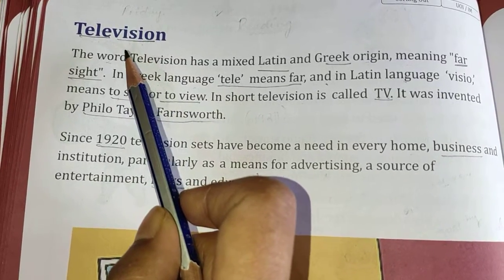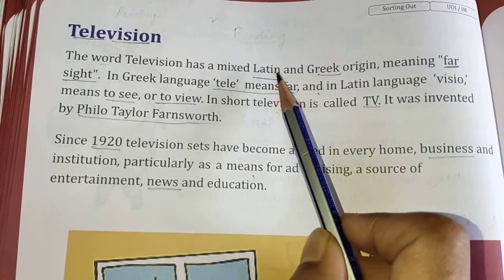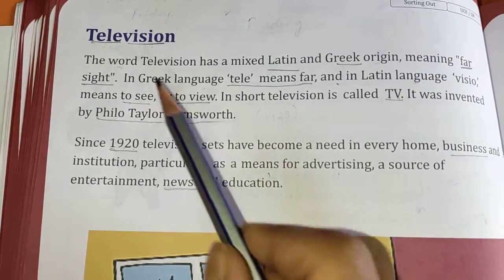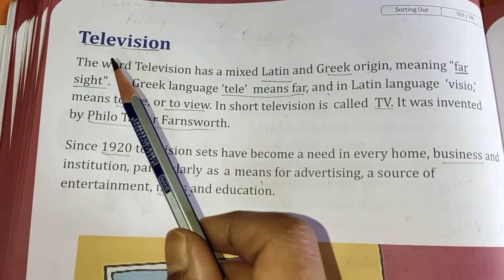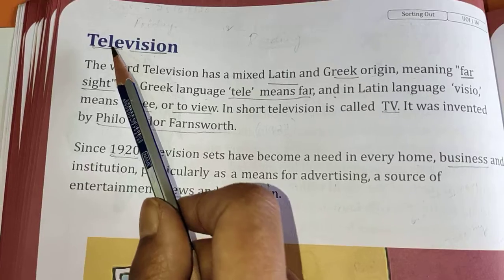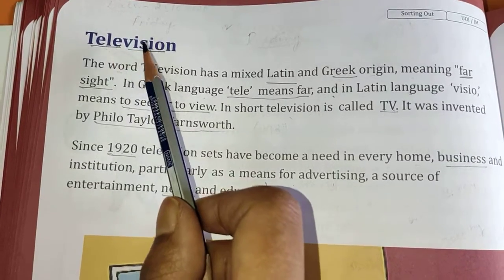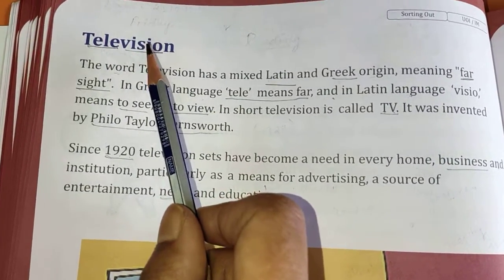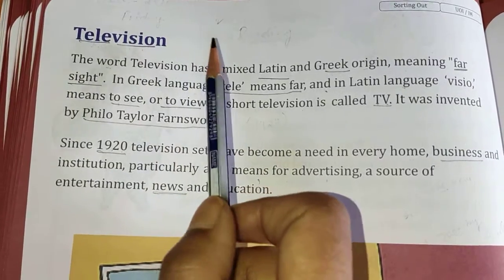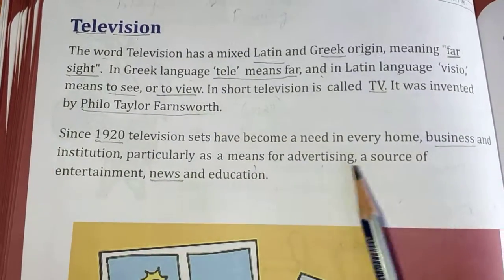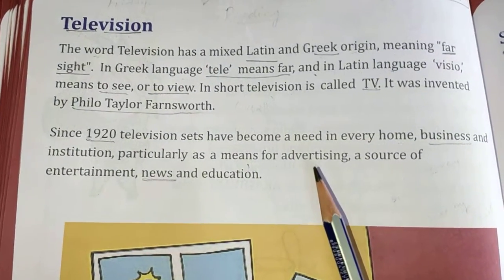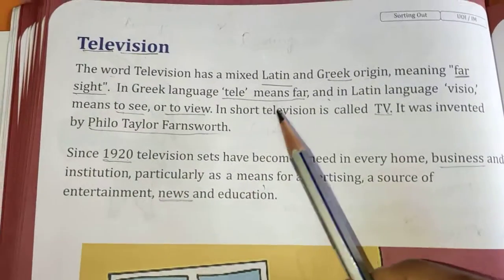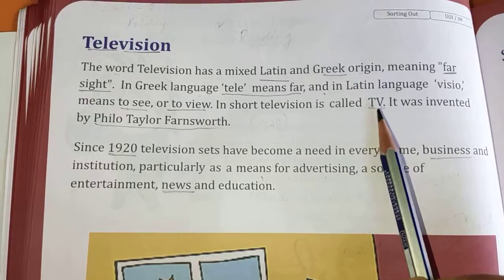The word television has a mixed Latin and Greek origin. Tele means far, and vision means sight, or to see or to view. We get a view from afar, because we can see any part of the world on television. In short, television is called TV.